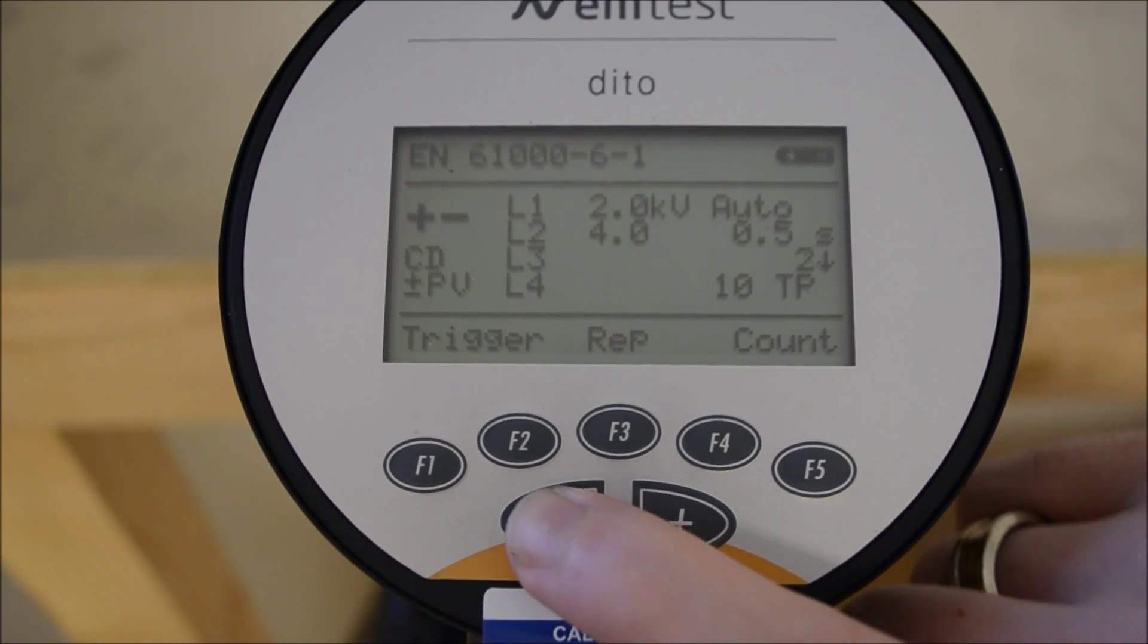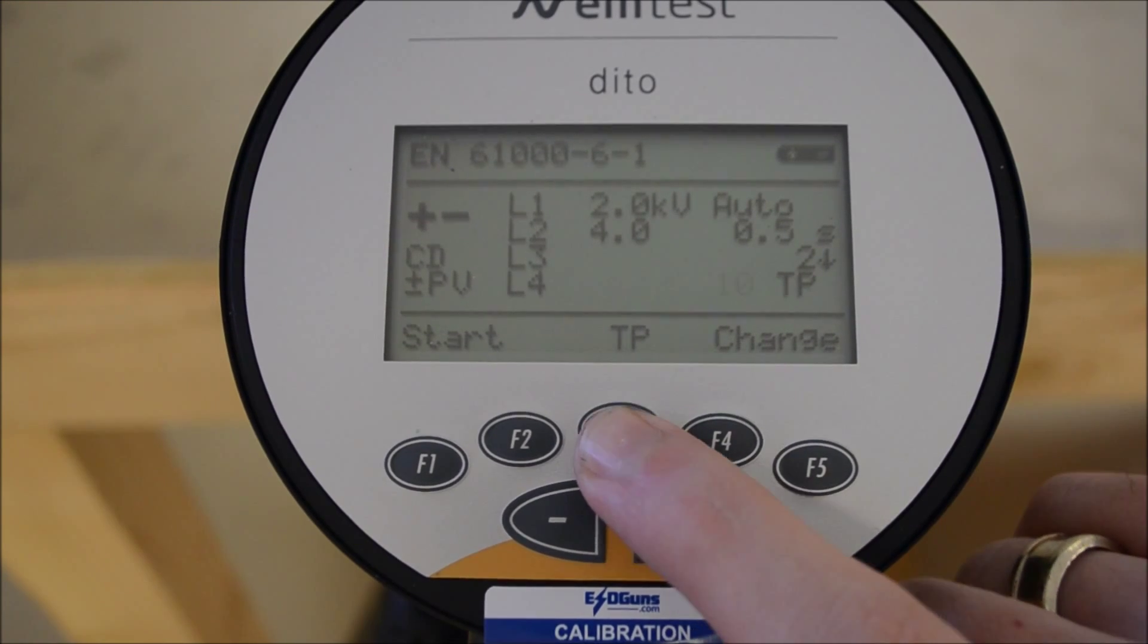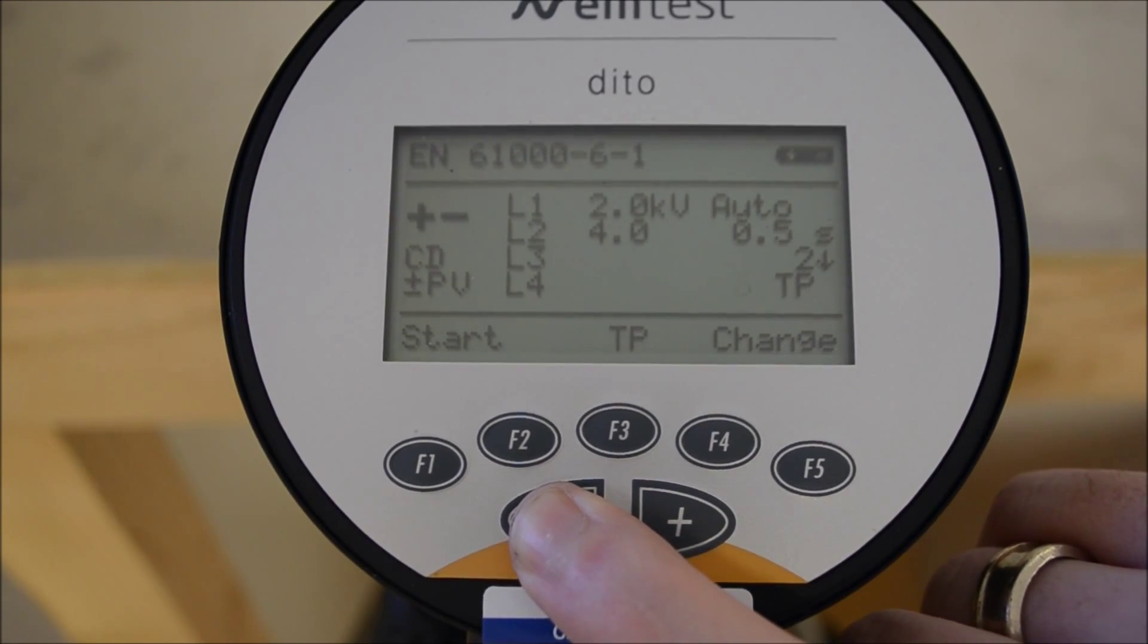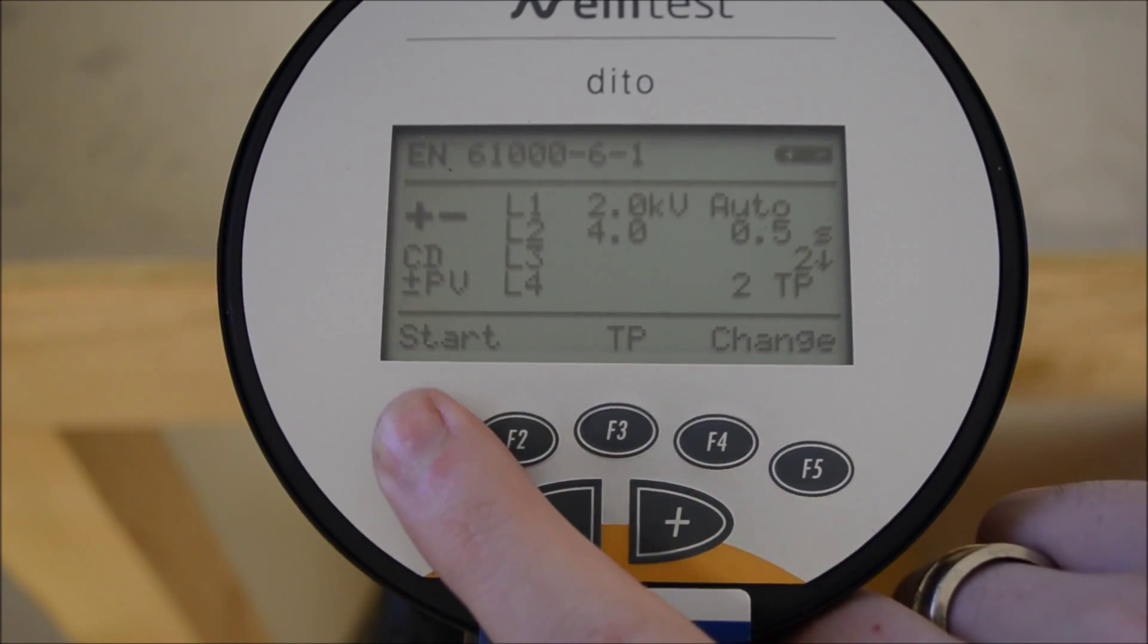In returning to the test routines submenu we press F3 which displays TP allowing us to set the number of test points. Two test points to keep it quick will allow you to see the operational sequence while conducting a multiple point test.